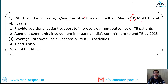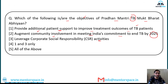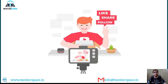Question 3: Which of the following are objectives of Pradhan Mantri TB Mukt Bharat Abhiyan? Option 1 — providing additional patient support to improve treatment outcomes; Option 2 — augmenting community involvement in meeting India's commitment to end TB by 2025; Option 3 — leveraging CSR activities. Your involvement in solving these MCQs helps retention, as these topics appear in Phase 1 and Phase 2 of your examination. The answer is all of the above — all three are objectives of this mission.